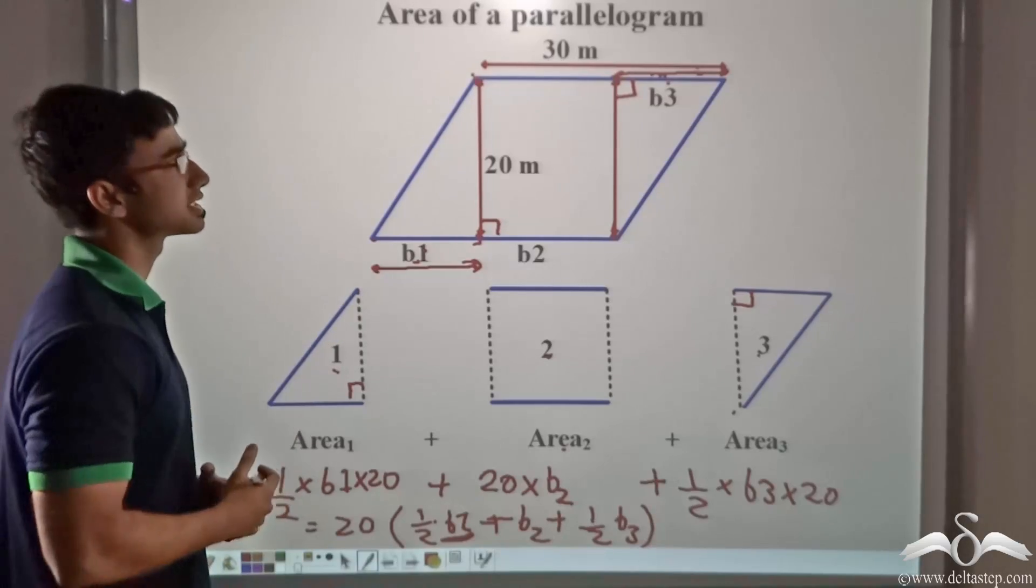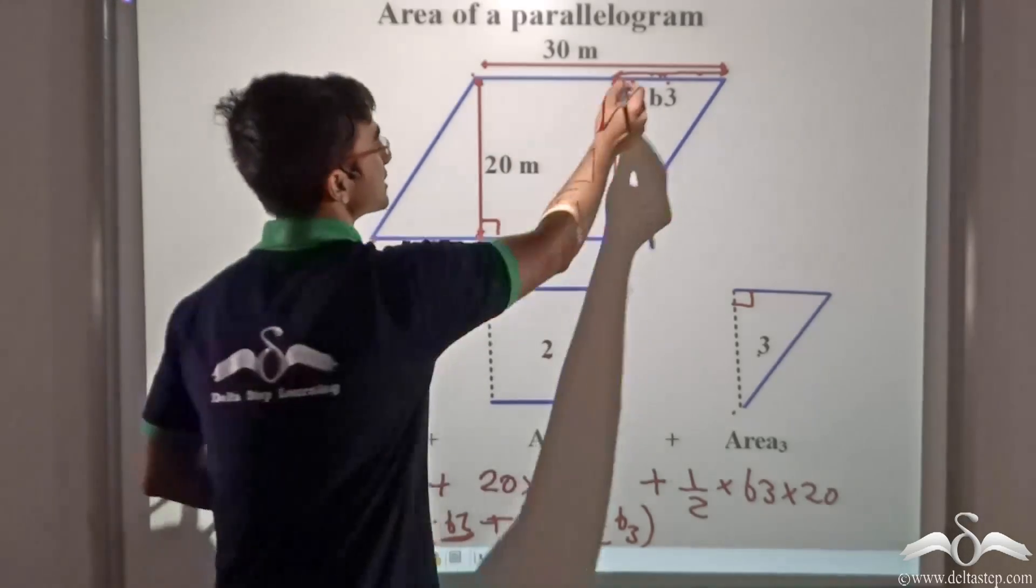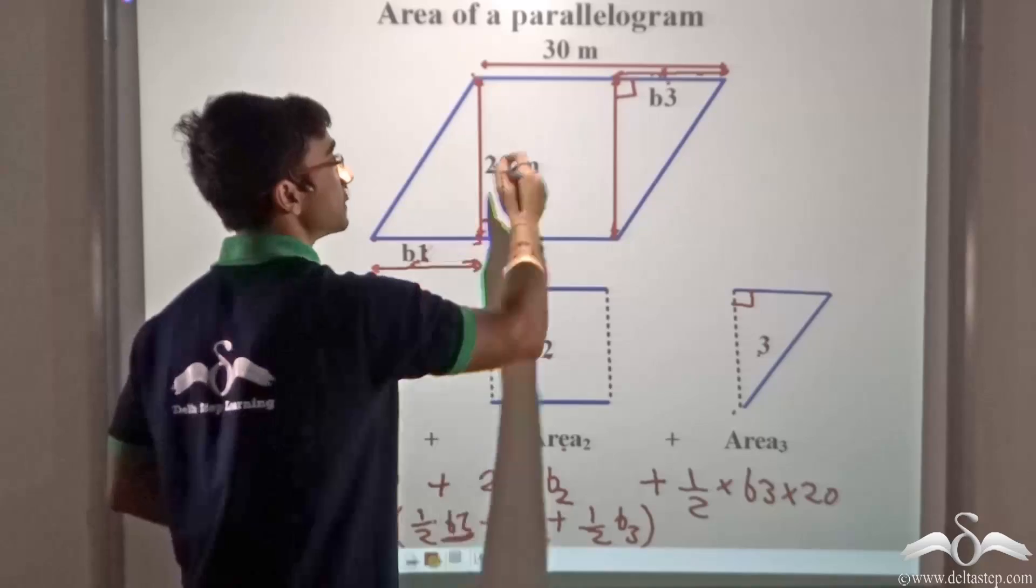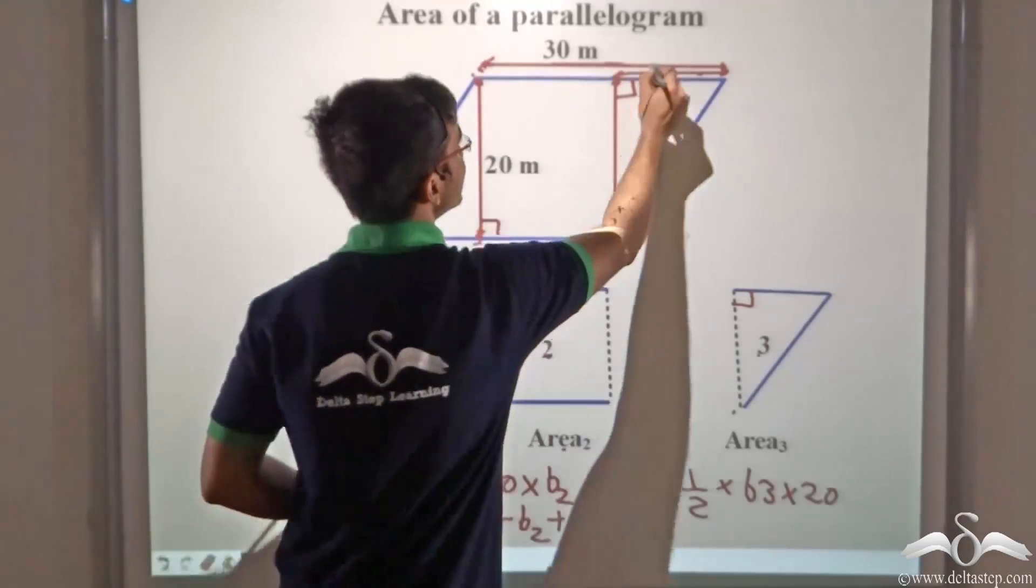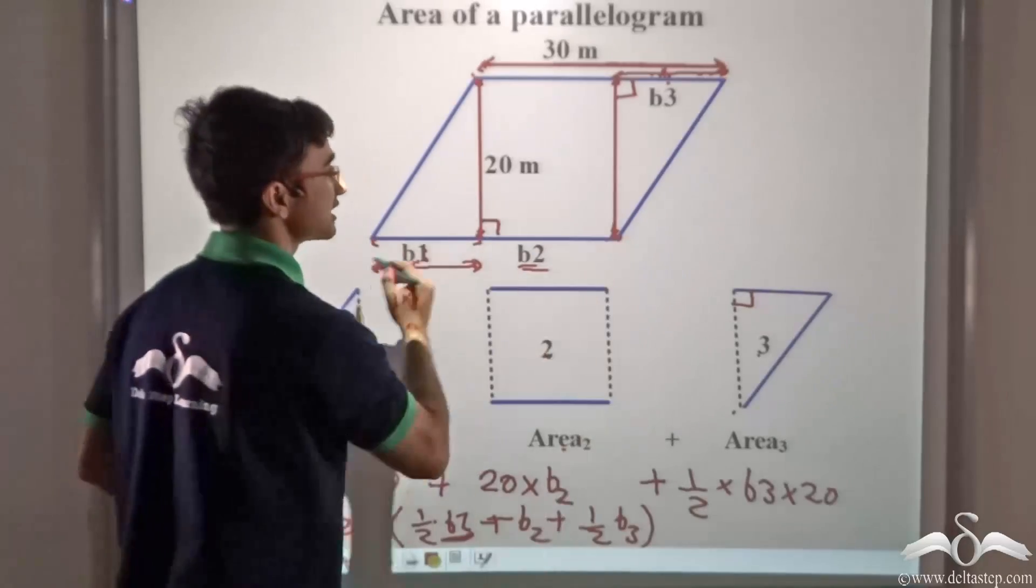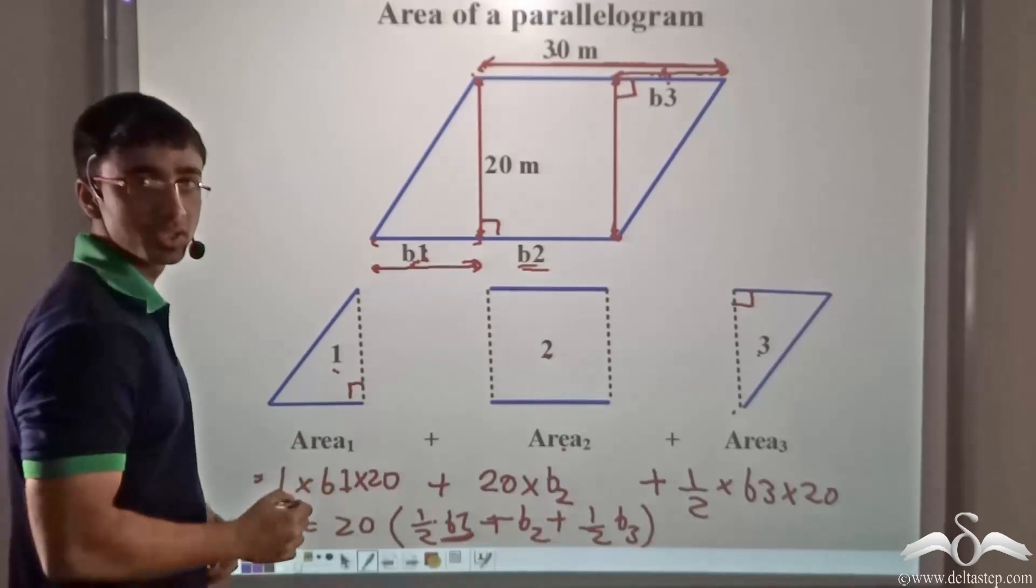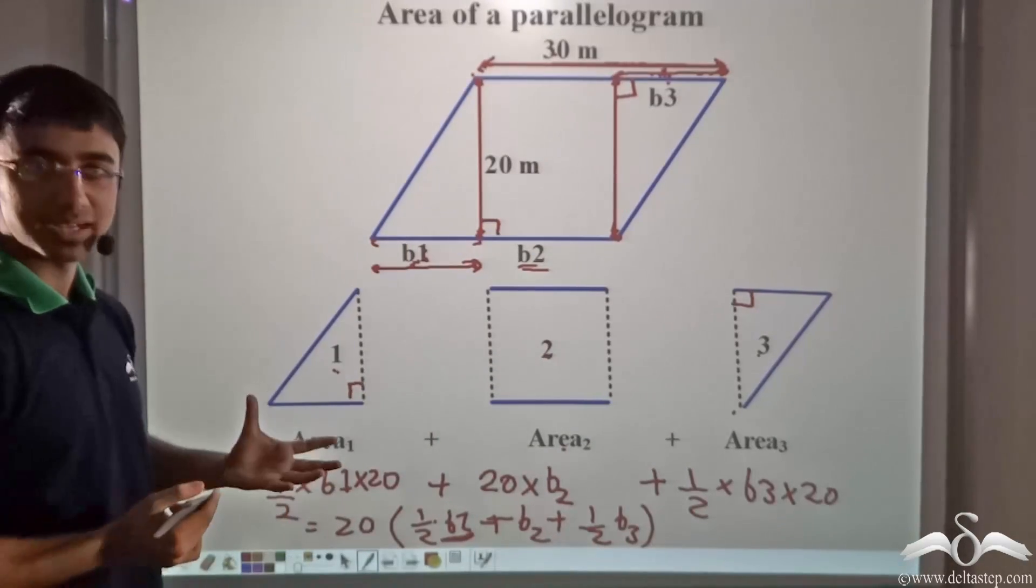So in other words, I will be able to get this half B1 plus half B3 plus B2 as the entire side. That is this particular side which is 30 meters. So how can I write the area of the parallelogram now?